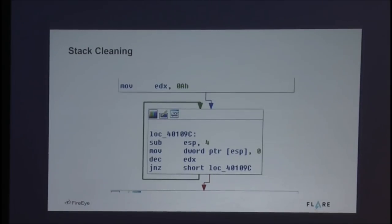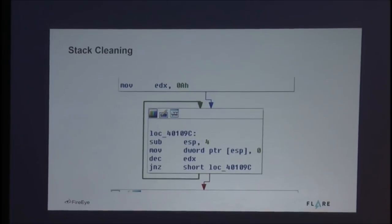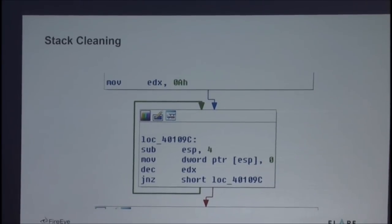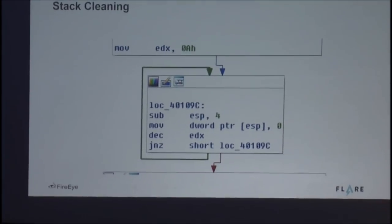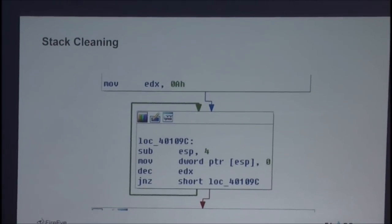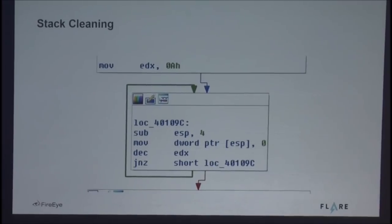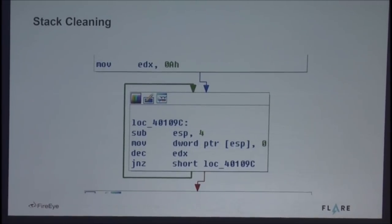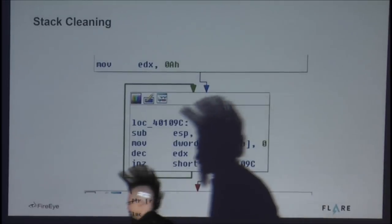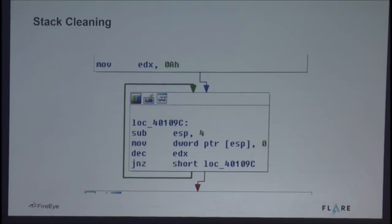So this is stack cleaning. I realize that everyone in the audience might not be so familiar with x86 disassembly. This is what it looks like, and this is what stack cleaning looks like. The top instruction is setting a loop counter to 10. Then the code will flow into the middle block, and it will repeat this action 10 times. Inside this middle block, it's going to allocate four bytes of stack space each time it goes through this loop.